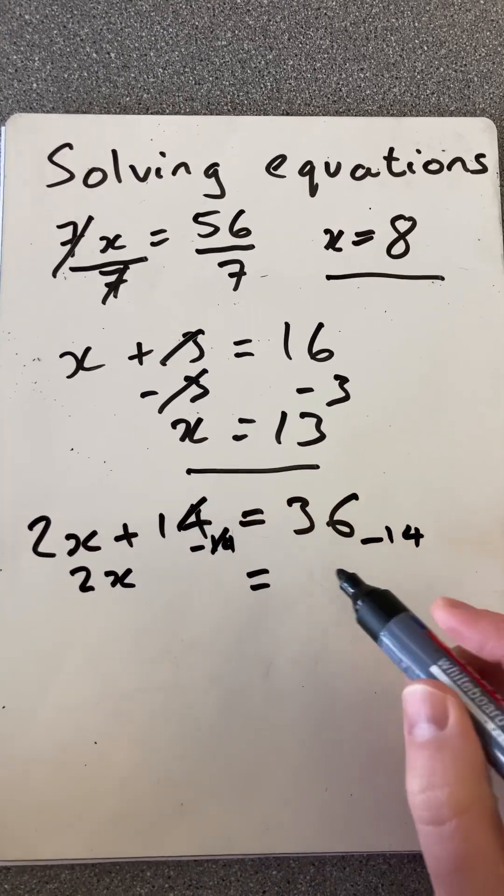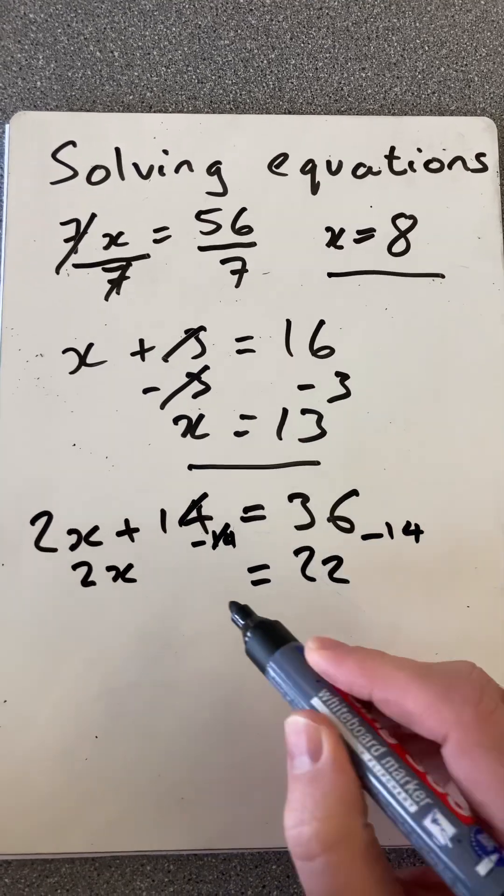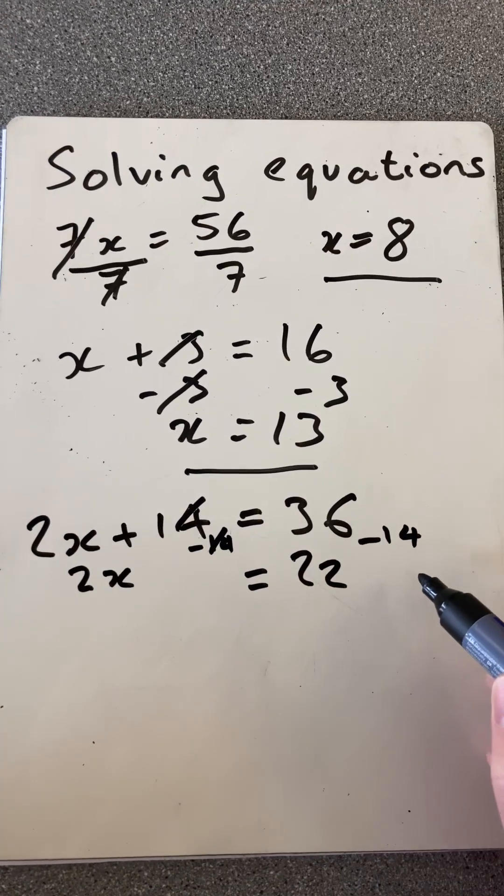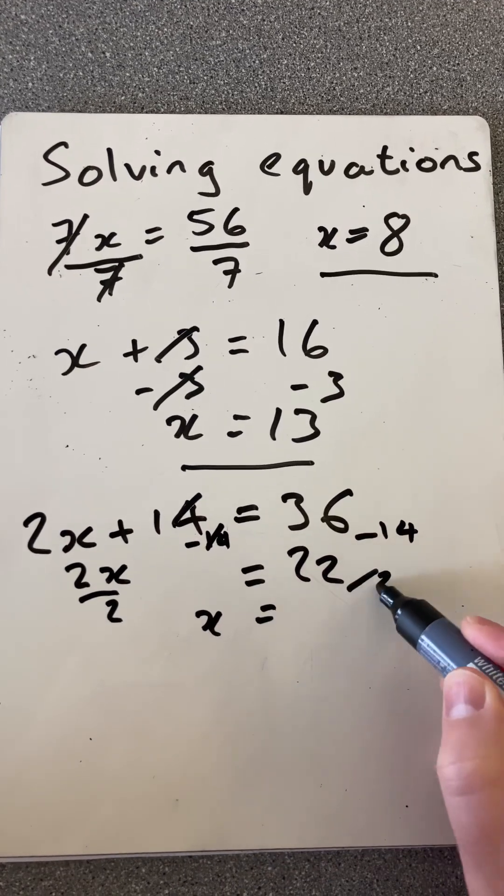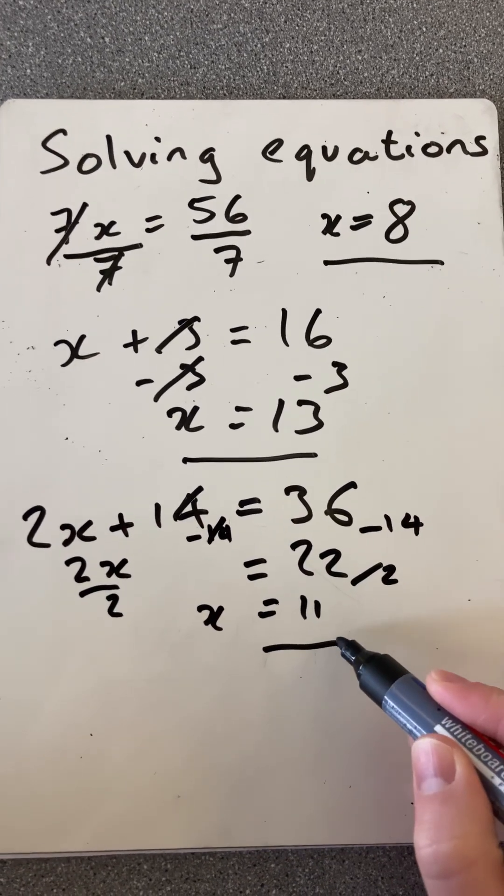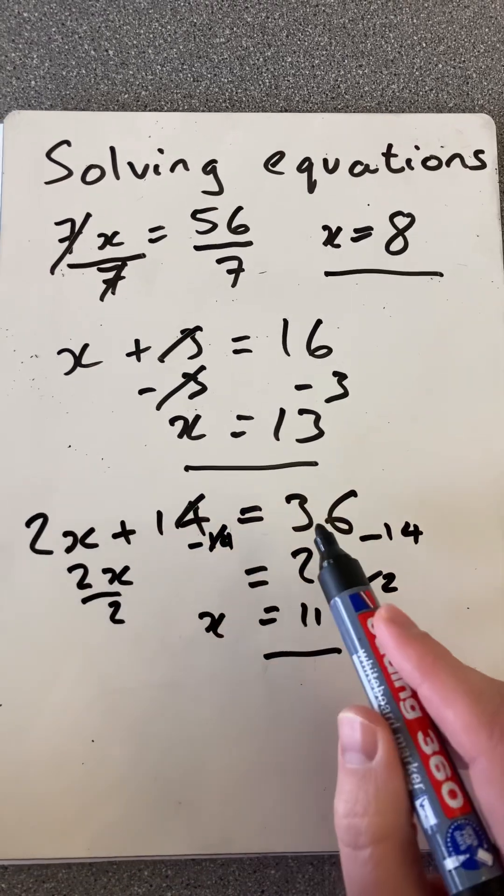So now I'm going to divide by 2 on both sides. So x will equal, divide that by 2, 11. And check your answer, 22 plus 14 is 36.